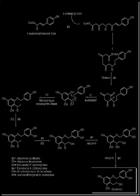Glycosylation enzymes include: anthocyanidin-3-O-glucosyltransferase, flavone-7-O-beta-glucosyltransferase, flavone-apiosyltransferase, flavanol-3-O-glucoside-L-rhamnosyltransferase, and flavanol-3-O-glucosyltransferase. Further acetylations involve isoflavone-7-O-beta-glucoside-6-O-malonyltransferase.